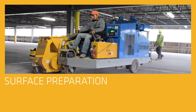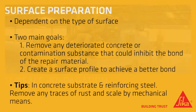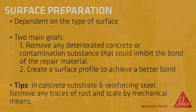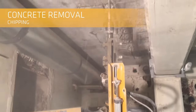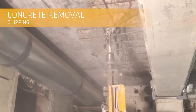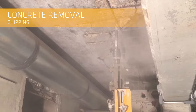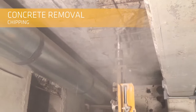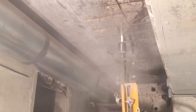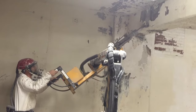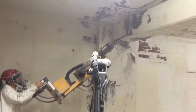The first step in properly preparing a surface for repairs is removal of deteriorated concrete. Proper surface preparation is dependent on the type of surface being prepared. For concrete, the two main goals are to remove any deteriorated areas or bond-inhibiting substances from the repair area in order to create a surface profile that will achieve its best possible bond.